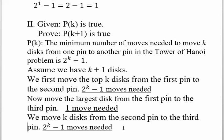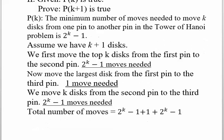Let's total up the number of moves. 2^k - 1 plus 1 plus 2^k - 1. You might pause the video and see if you can anticipate the next step.